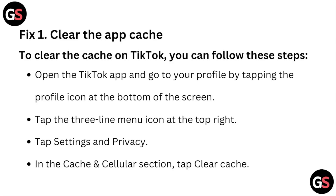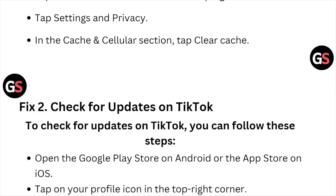Open the TikTok app and go to your profile by tapping the profile icon at the bottom of the screen. Tap on the three-line menu icon on the top right. Tap Settings and Privacy. In the caches and cellular section, tap Clear Caches.